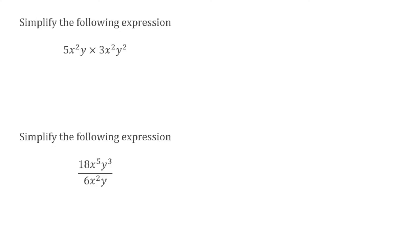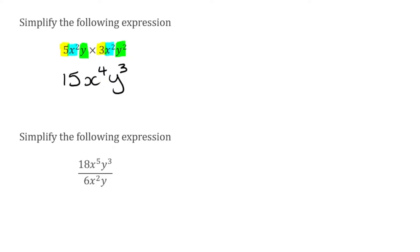Looking at this first question, I've got 5x squared y multiplied by 3x squared y squared. Looking at the terms I can combine, I've got 5 multiplied by 3, which is 15. I've then got x squared multiplied by x squared. Going back to our laws of indices, when we multiply powers of the same base, we add the indices. So x squared multiplied by x squared gives x to the power of 4. And then finally, y multiplied by y squared — y is y to the power of 1, add 2 is 3 — so that would be y cubed.